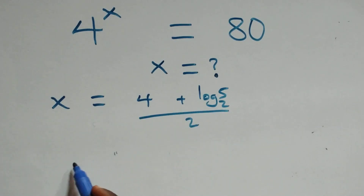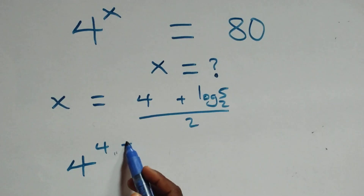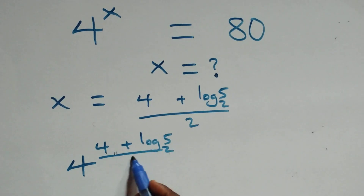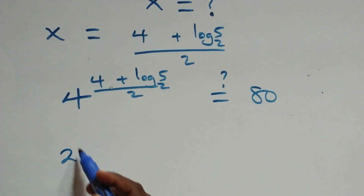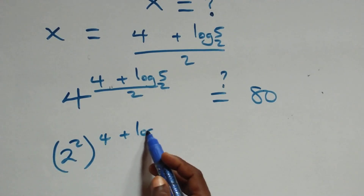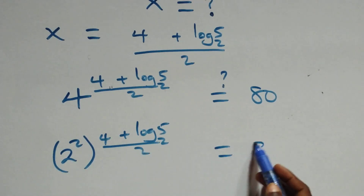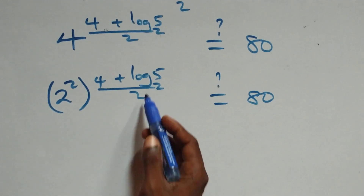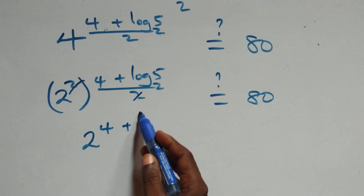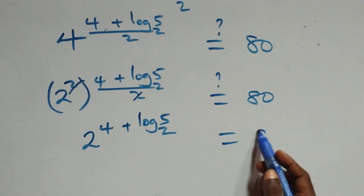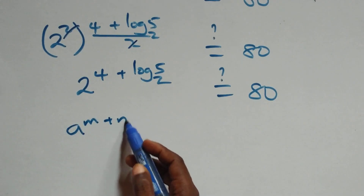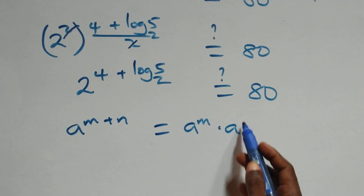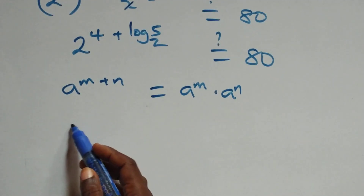Substituting x equals (4 plus log base 2 of 5) over 2 into 4^x, we have 4 raised to (4 plus log base 2 of 5) all over 2 equals 80. We express 4 as 2 squared, giving 2 squared raised to that power, which equals 2 raised to the power (4 plus log base 2 of 5). Applying the law of indices, a^(n+a) equals a^n times a^a.